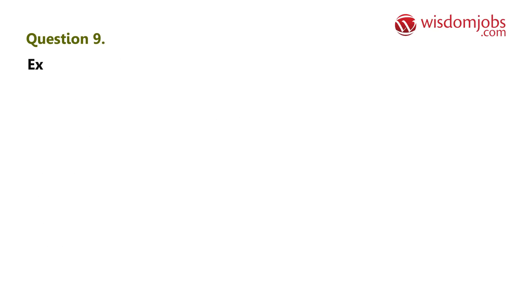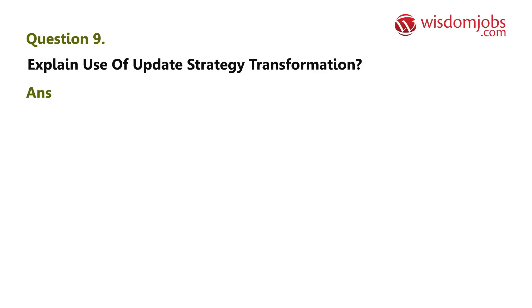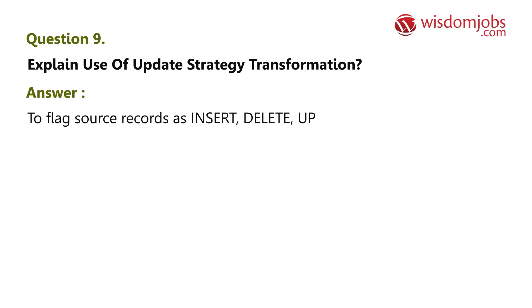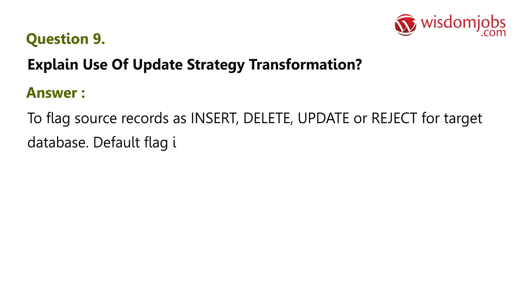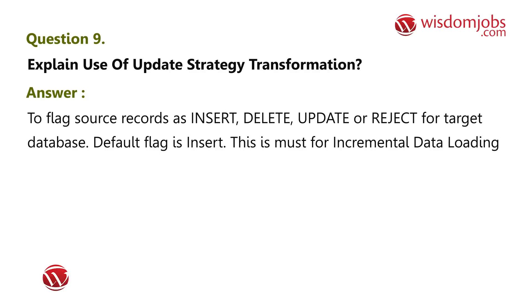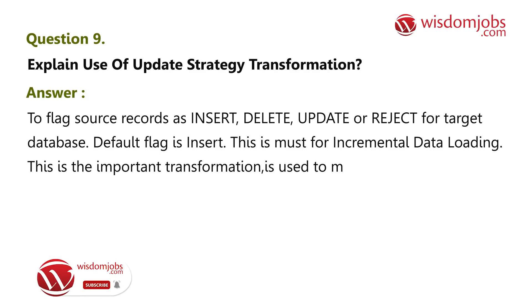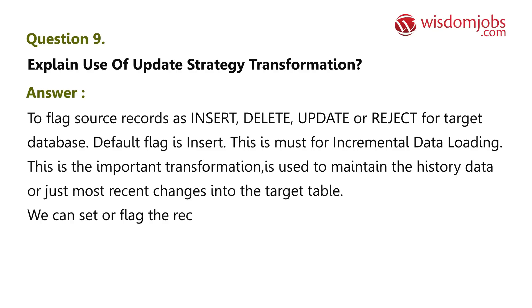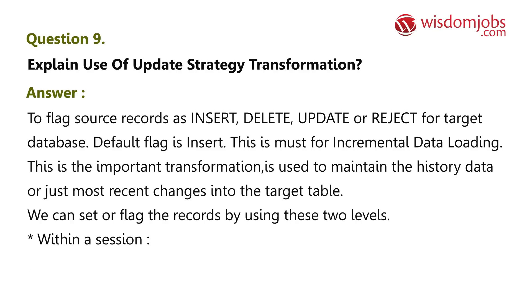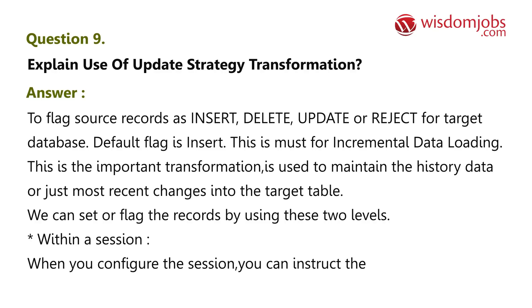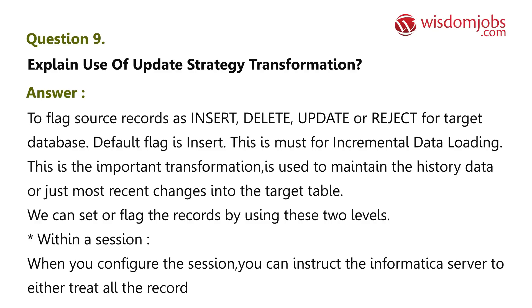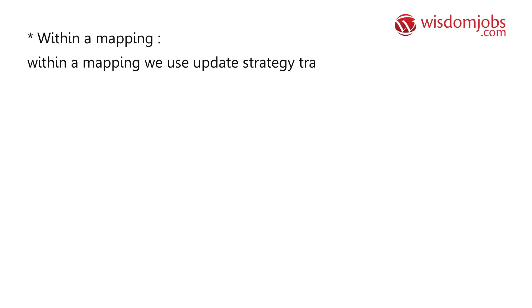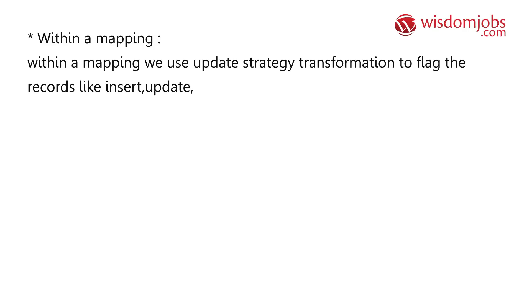Question 9: Explain the use of update strategy transformation. Answer: Update strategy is used to flag source records as insert, delete, update, or reject for the target database. The default flag is insert. This is essential for incremental data loading and is used to maintain history data or the most recent changes in the target table. We can set or flag the records using two levels: within a session, you can instruct the Informatica server to treat all records the same way; within a mapping, we use the update strategy transformation to flag records as insert, update, delete, or reject.